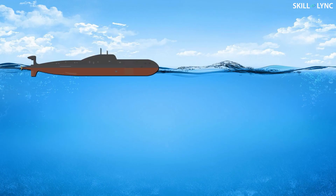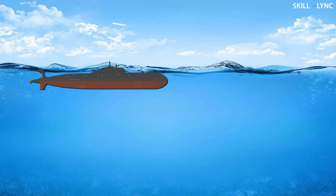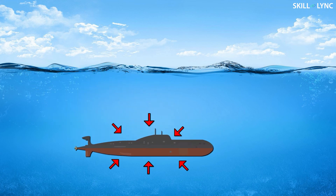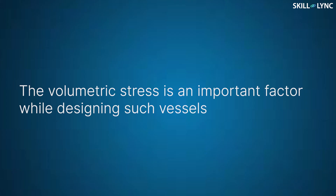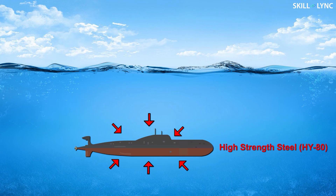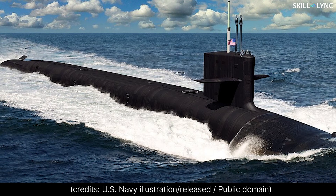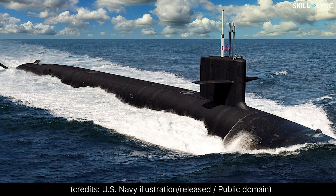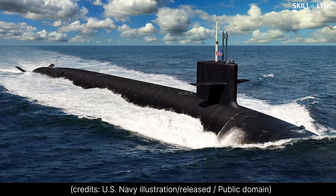In underwater vessels, like submarines, the water pressure on the hull increases as the depth increases. Thus, the volumetric stress is an important factor while designing such vessels. Otherwise, the pressure of the water could crush the vessel. So keeping this in mind, materials that have high strength against compression are used to design the hull. Higher the bulk modulus of a material, the better will be the resistance against compression. High strength steel is usually used for designing the hulls of underwater vessels.